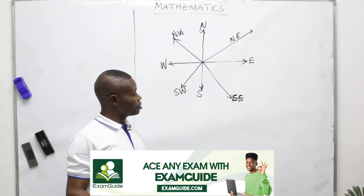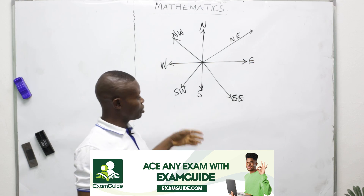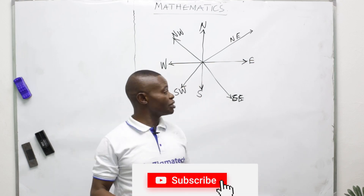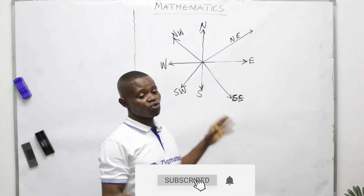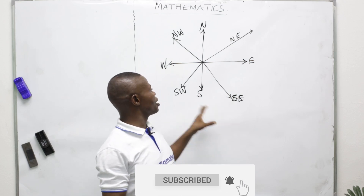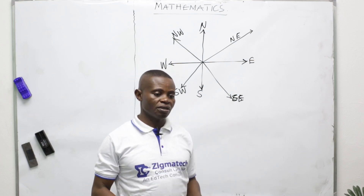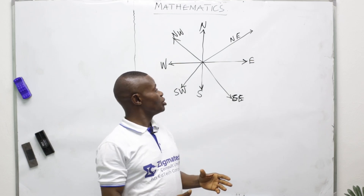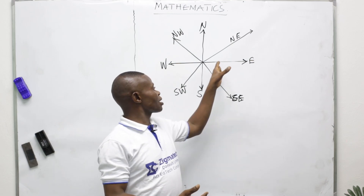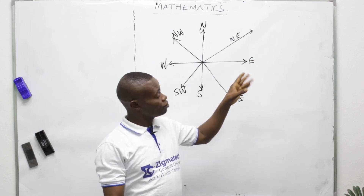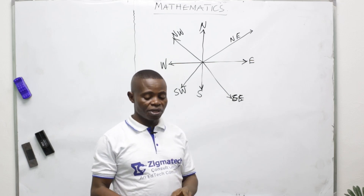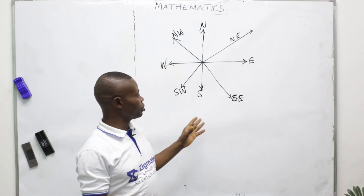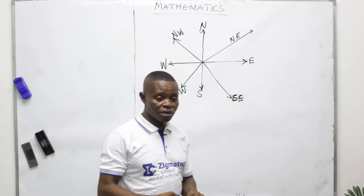There are some things we use to represent or calculate. The actual difference is between the compass bearing and the three-digit bearing. We can interchange between the two — we can either convert from compass to three-digit, or from three-digit back to compass bearing.